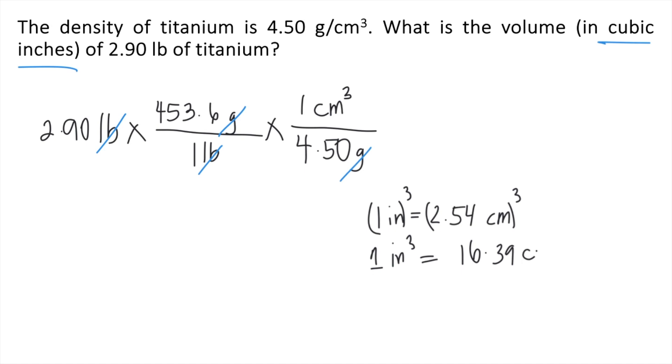And cm cubed is cm cubed. Okay, so the conversion is 1 inch cubed is equal to 16.39 cubic centimeters. So you multiply by the conversion factor.